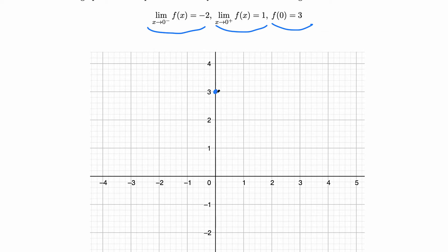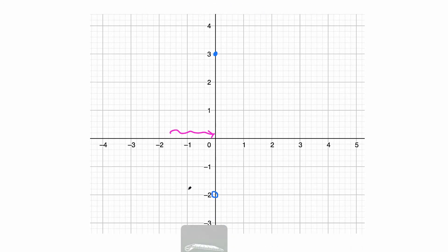We need to put a dot for the exact value, and limit values are shown with open circles. Here it says when x approaches 0 from the left side, the function approaches -2. So the function approaches -2. Here is -2, so I'm going to put a circle.